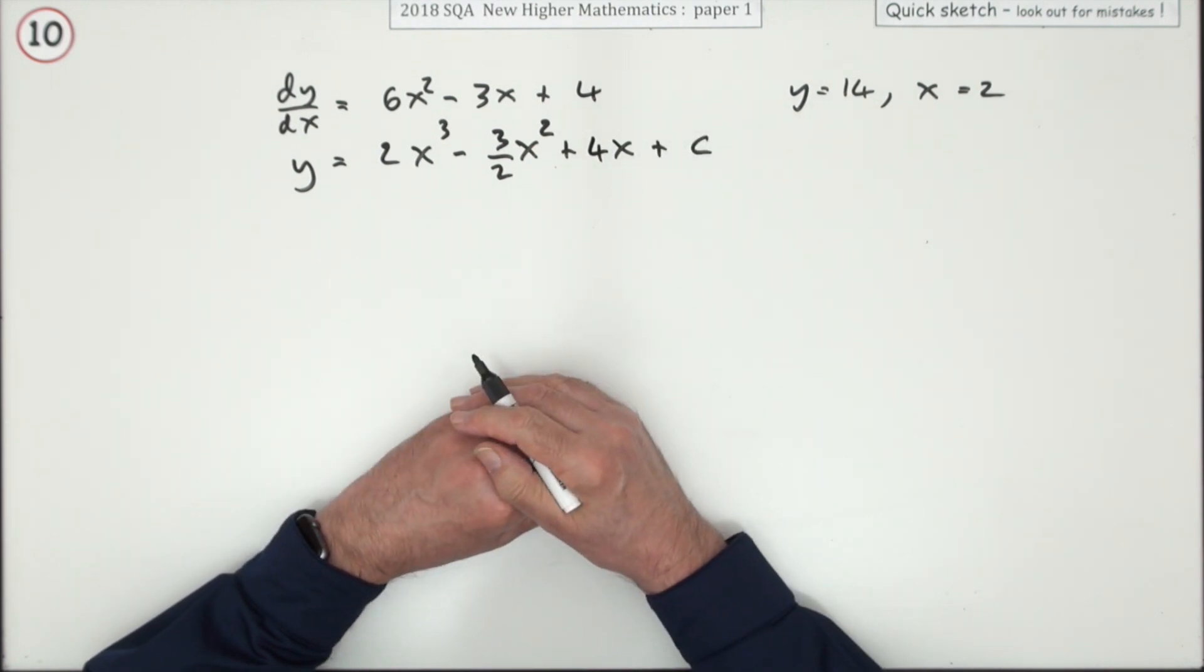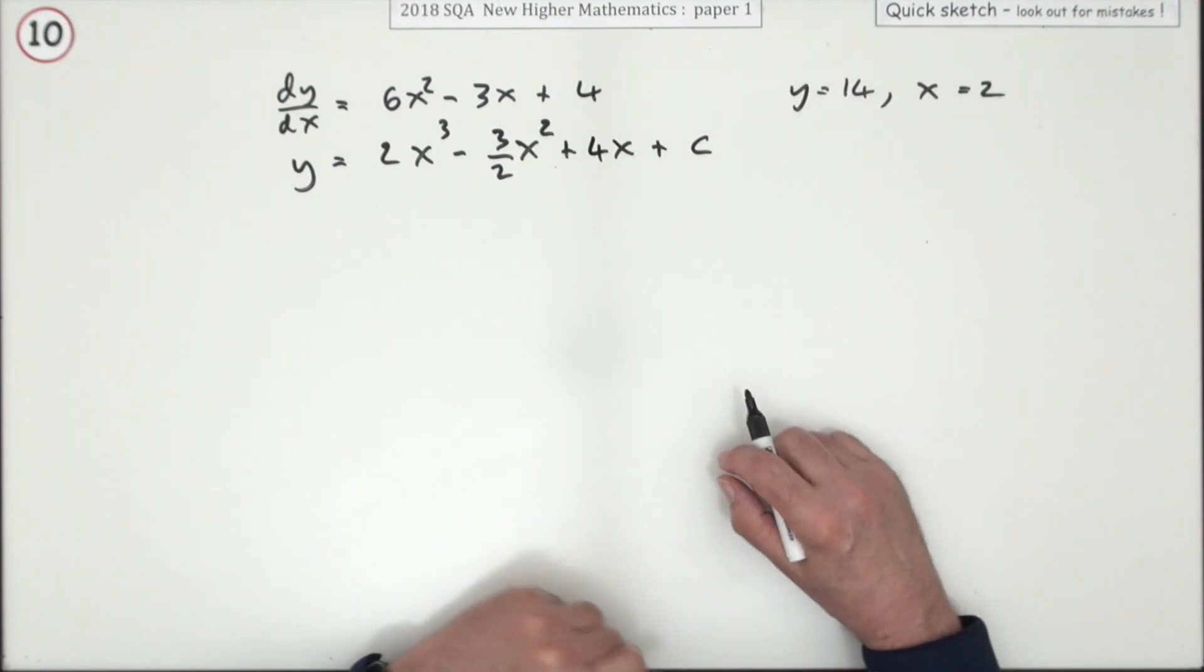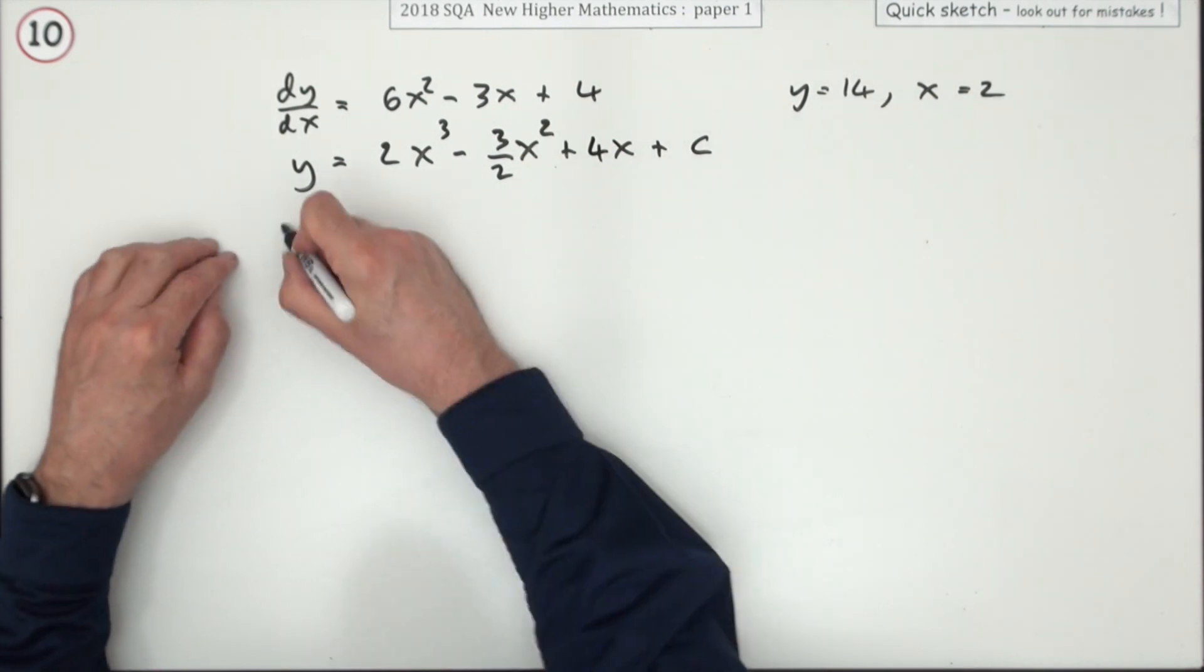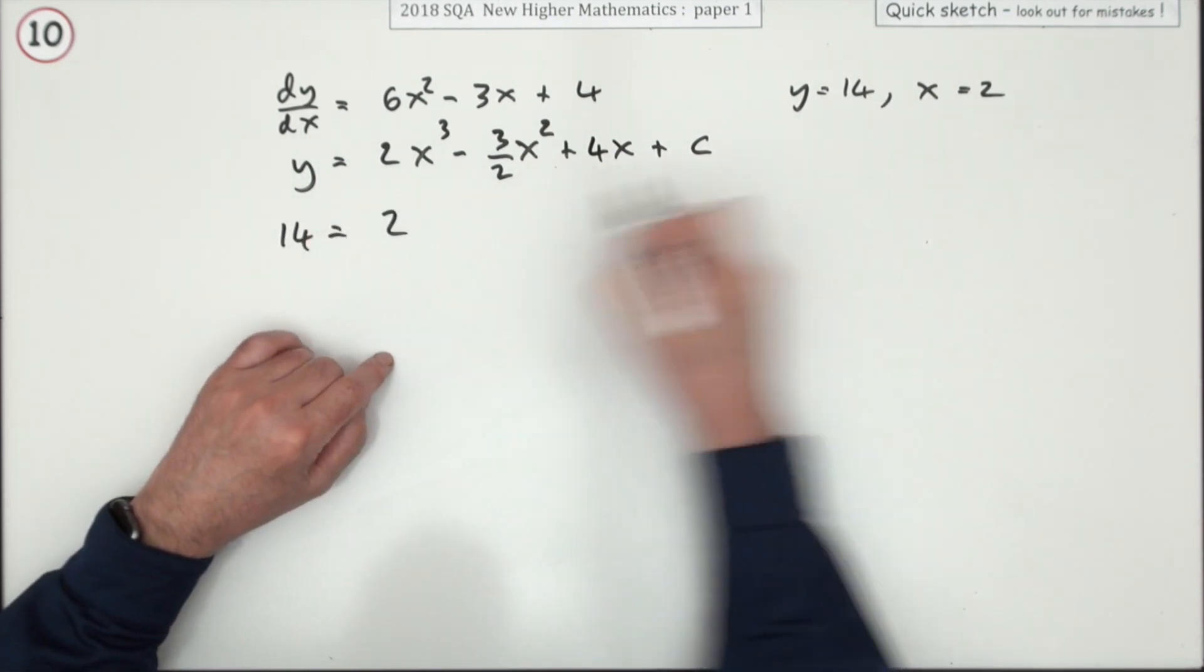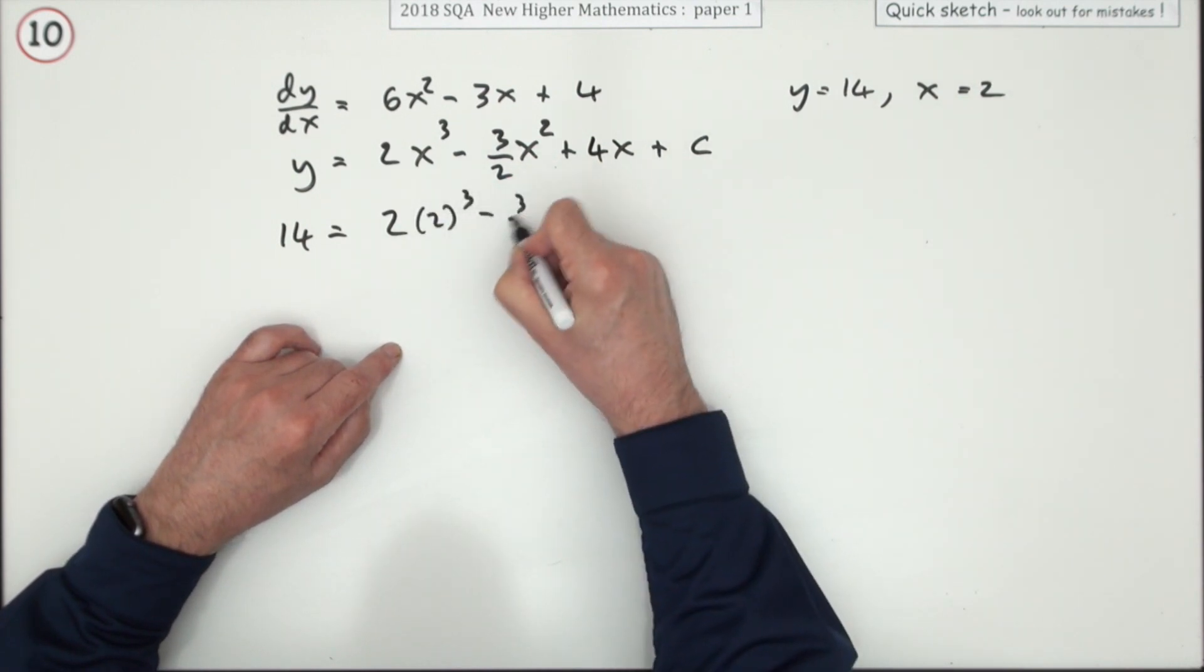That's what you're going to use these numbers for. Because if y is 14 when x is 2, I'll just substitute them all in.